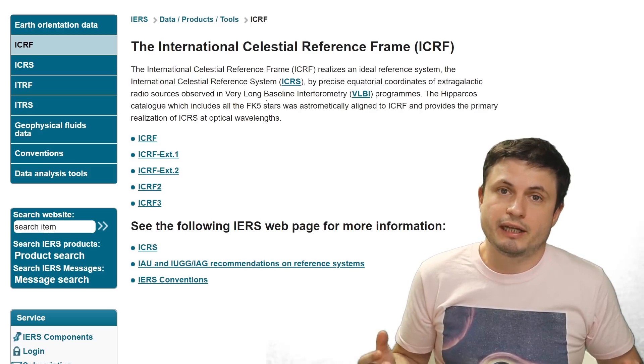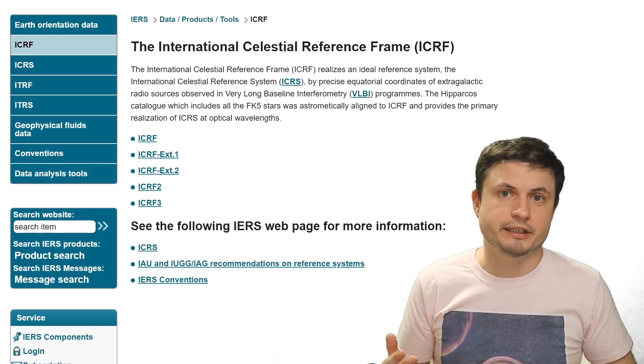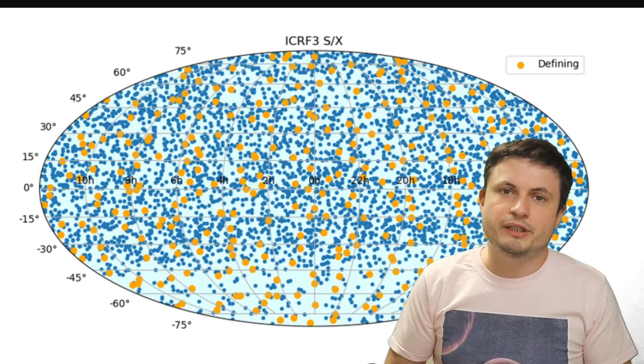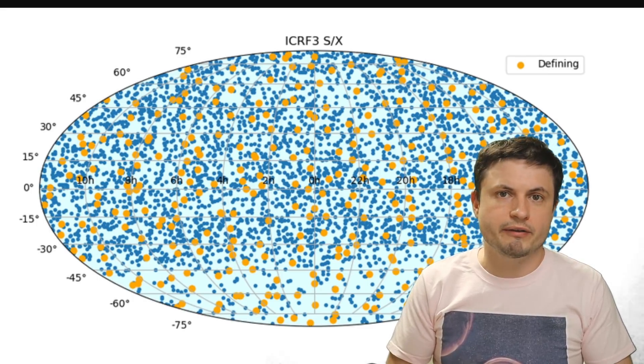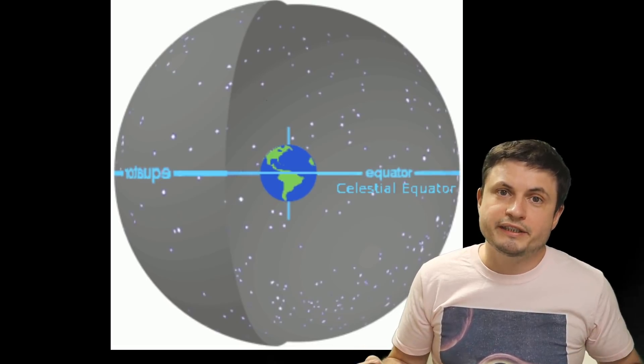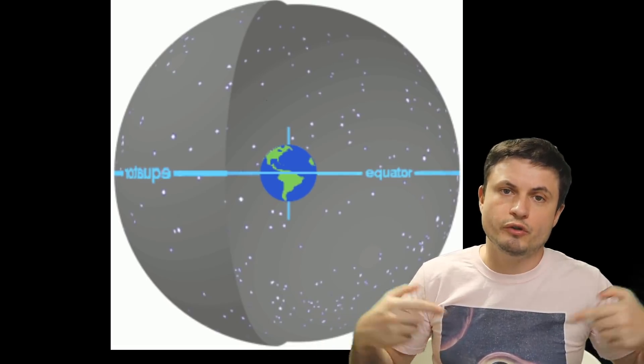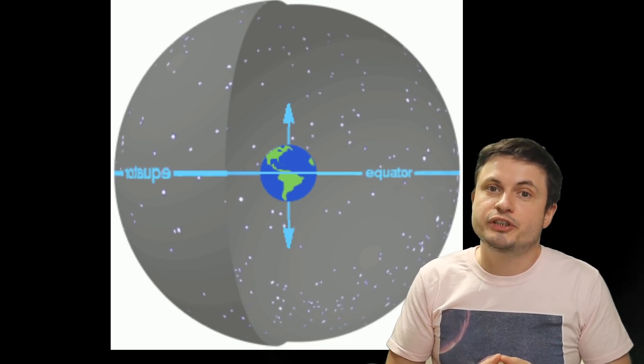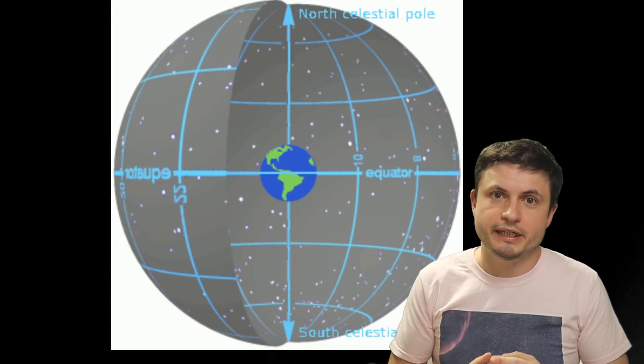But this ICRF map essentially shows you an extremely precise coordinate system that's being used by anything from spacecrafts to essentially every single tool we have today that depends on satellite technology. With the one that's being used right now, known as ICRF3, that sort of looks like this. And by then, essentially projecting each of these quasars onto the surface of our planet, we can establish the exact position of different things on the planet.